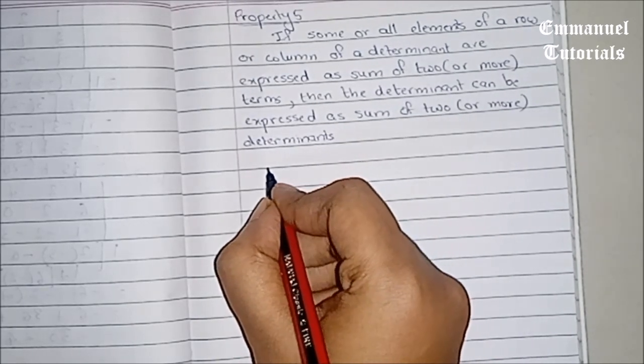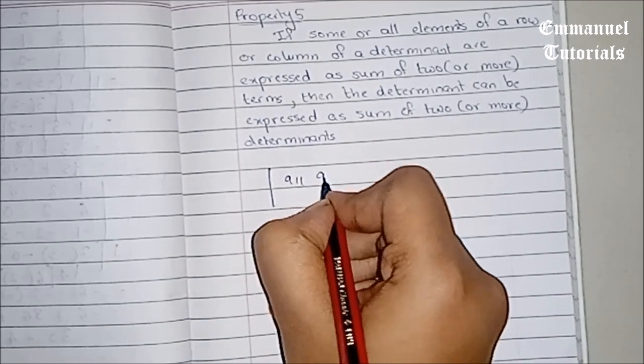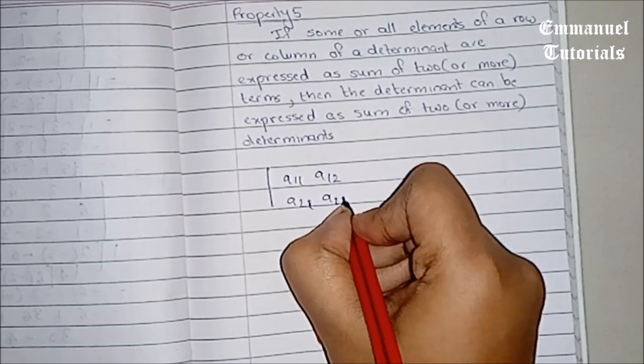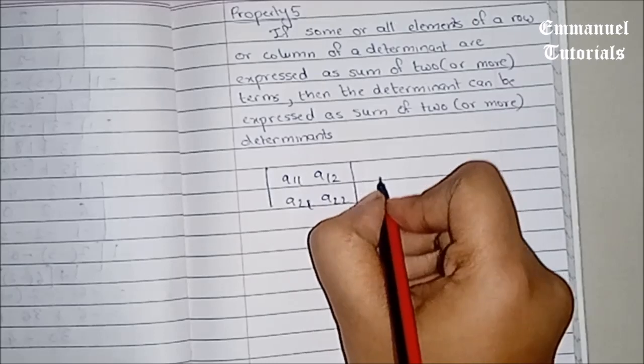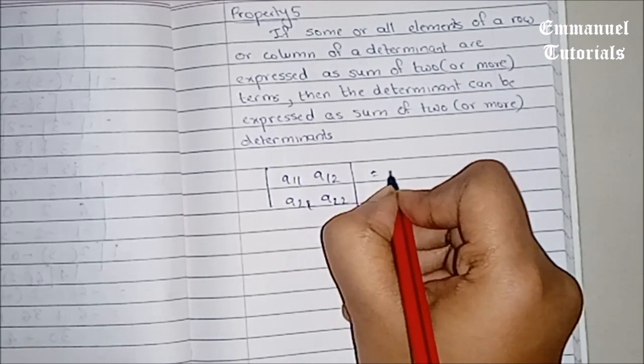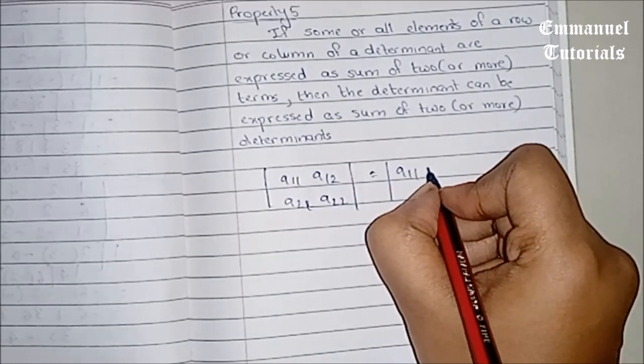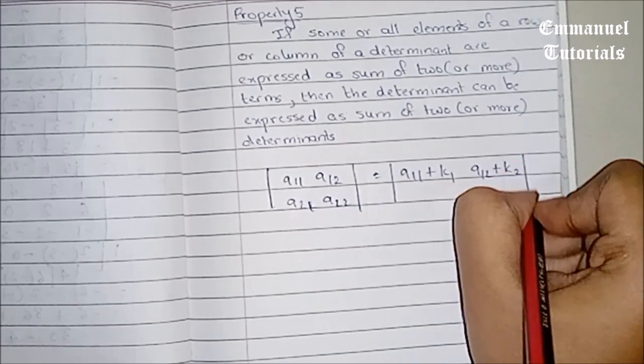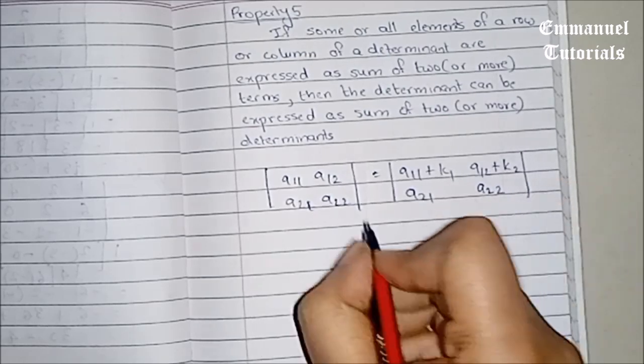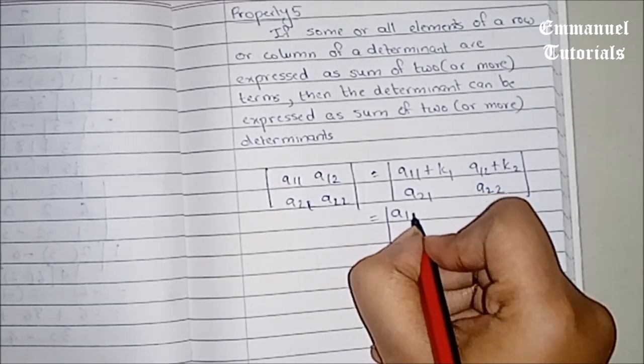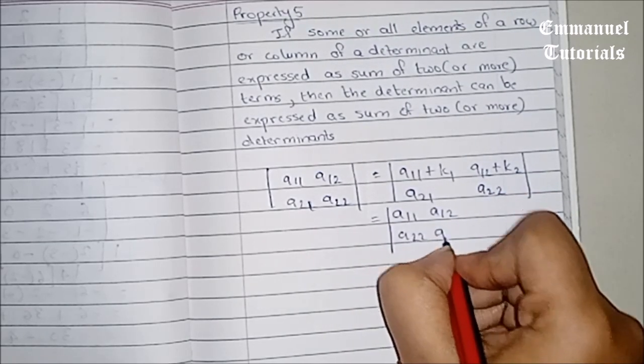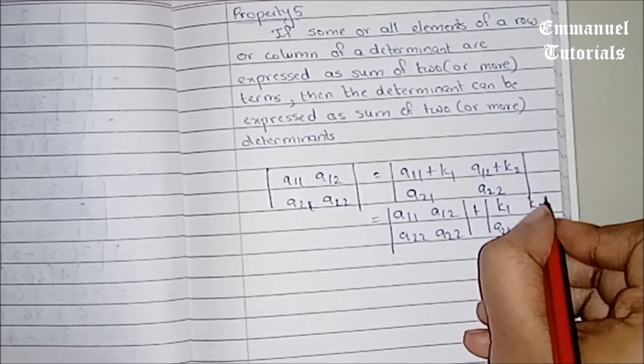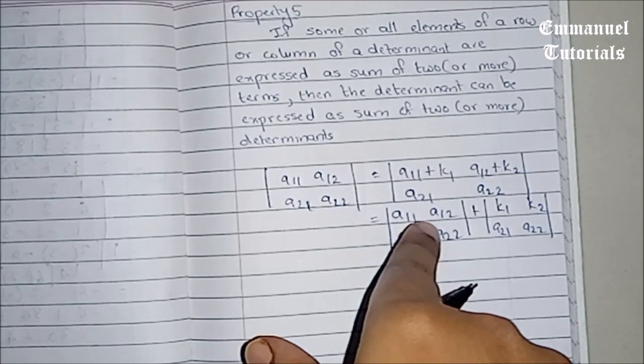Let's see how this works. It will be easier for you to understand when we see it in the form of the determinant. So let's take a 2 by 2 determinant. The general form is a11, a12, a21, a22. And what we are saying is that if we can write a11 in the form of a11 plus k1, a12 plus k2, a21, a22, this can also be written as a11, a12, a21, a22 plus k1, k2, a21, a22. This is what is being told by this property.